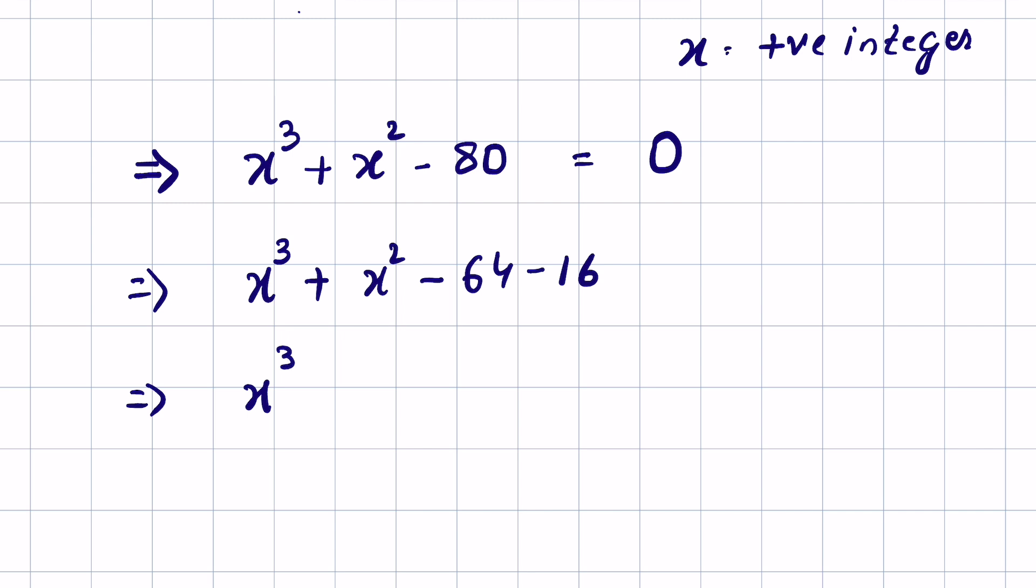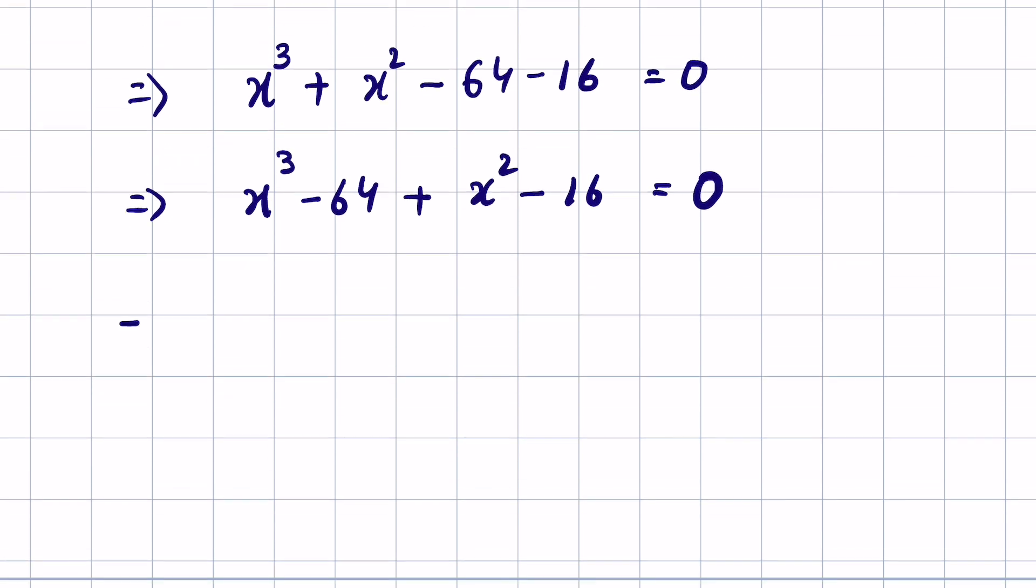So we have x³ - 64 + x² - 16. We just rewrote it. If you see, this is x³ - 4³ + x² - 4² = 0.